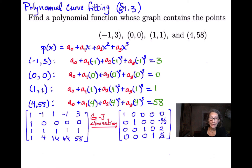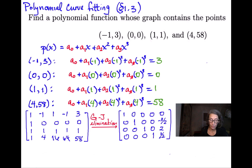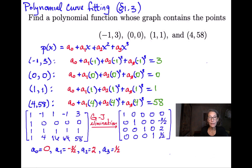You can do it by hand, but when doing homework after you've practiced a couple of times, at least check your answer using a calculator or computer like WolframAlpha. From the reduced row echelon form, each row gives an equation: a0 equals 0, a1 equals negative 3 halves, a2 equals 2, and a3 equals 1 half.